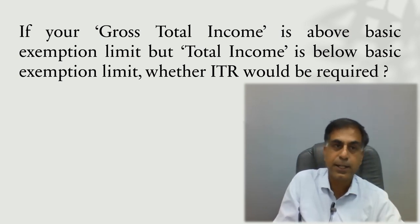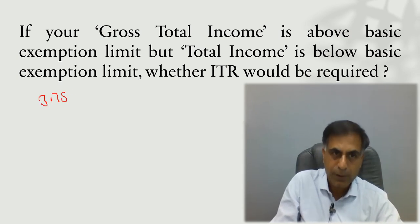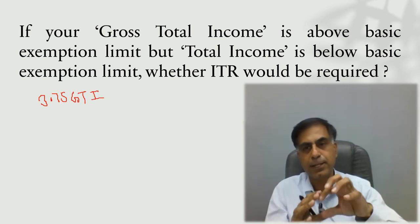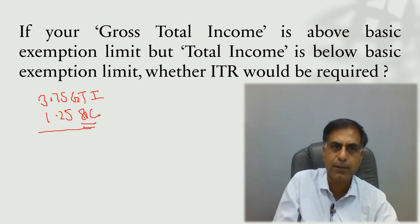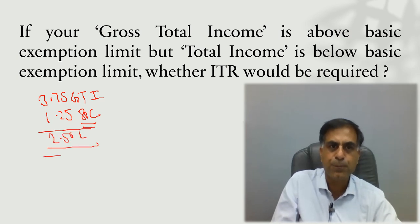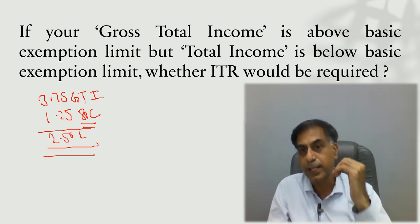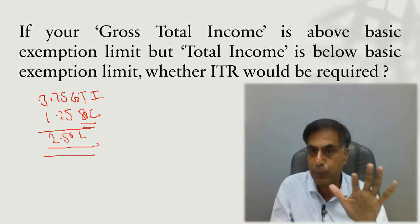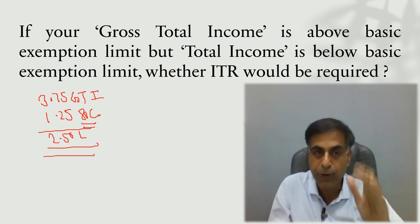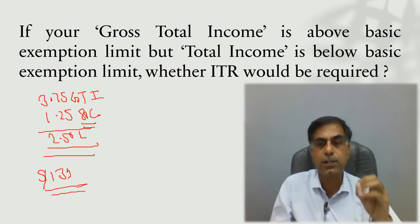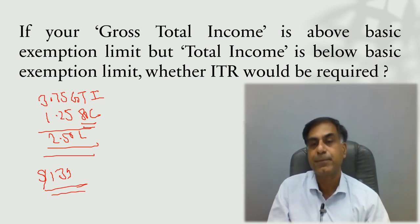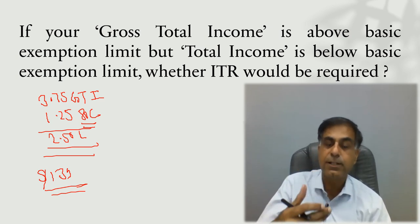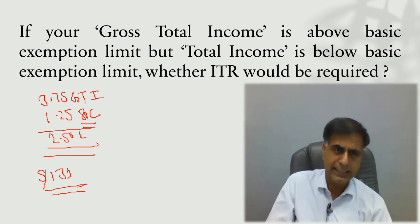Let me exemplify. Say your gross total income — income computed under all heads plus clubbing after adjusting losses — is Rs. 3.75 lakh, and you have invested Rs. 1.25 lakh in instruments like LIC and PPF under 80C. So net-net you are at Rs. 2.50 lakh, and you assume you are exempt. It is not so. Section 139 of the Income Tax Act 1961 says the criteria is not total income — it is gross total income.